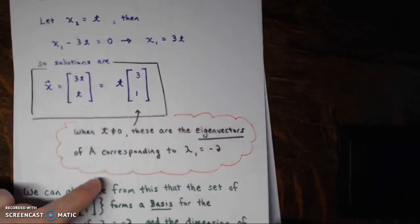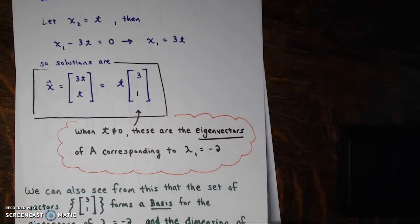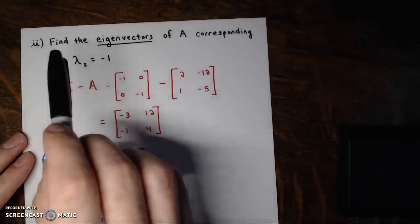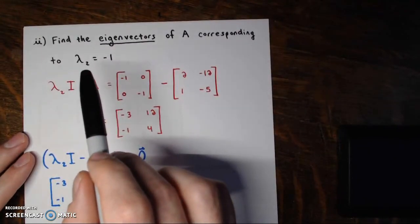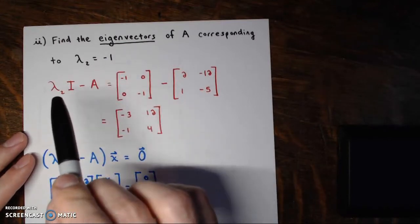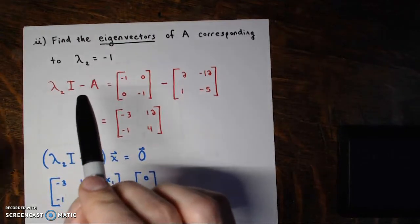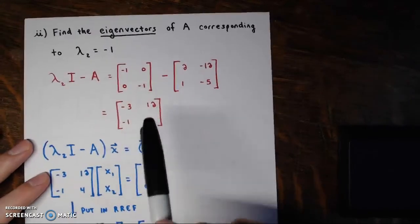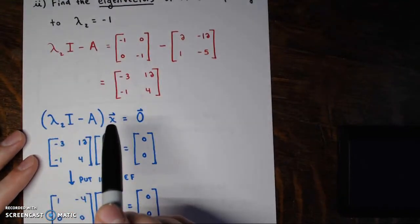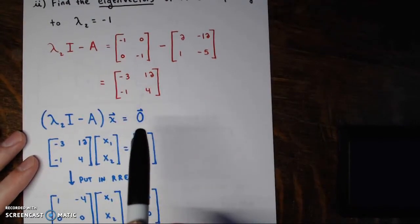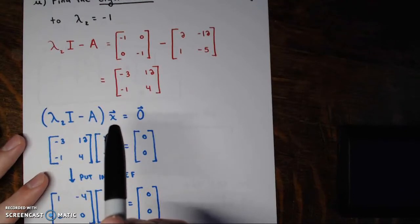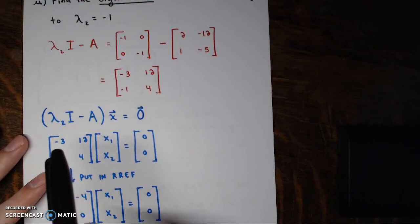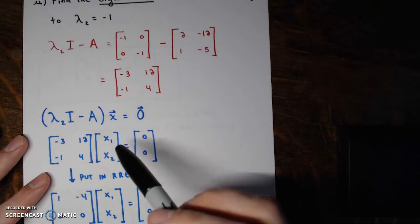In part 2, let's find the eigenvectors of A corresponding to lambda 2 equals -1. Same approach: take lambda 2 times I minus A, which is -1 times I minus A. Putting them together, we get the 2 by 2 matrix [-3, 12; -1, 4]. We want to find what vectors x we can multiply this by to get the zero vector. Any non-zero solution will be an eigenvector for this eigenvalue.